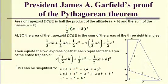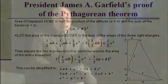Now we take that value and equate it with the trapezoid formula above. When we do that and apply the most elementary algebra, you'll notice what comes out: A squared plus B squared is equal to C squared — which everybody remembers, because if anything, that's the only thing people remember from their school days.